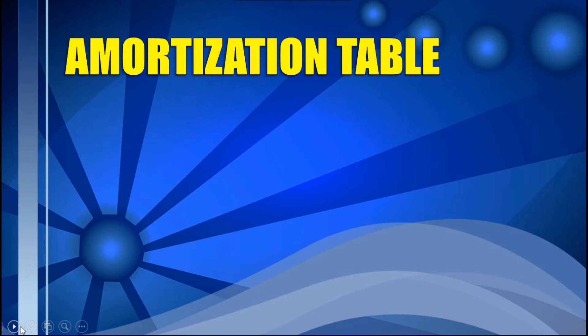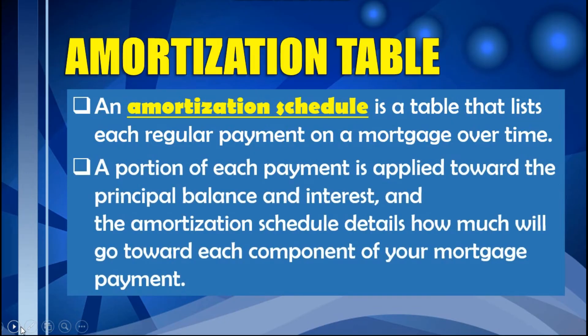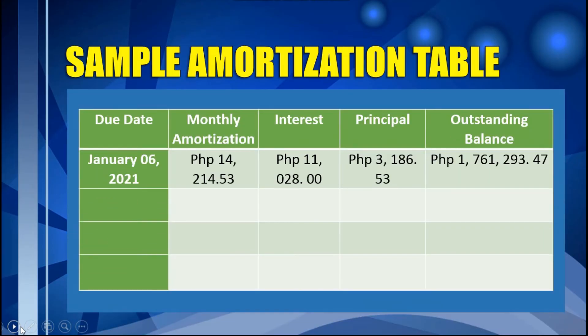Let's now learn how to make an amortization table. An amortization table or schedule is a table that lists regular payments on a mortgage over time. A portion of each payment goes toward the principal balance and interest, and the amortization schedule details how much goes to each component. The table includes columns for due date, monthly amortization, interest, principal, and outstanding balance.